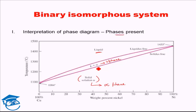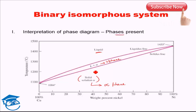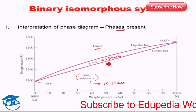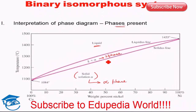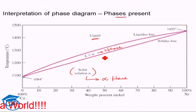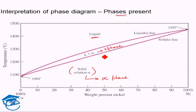You may ask: how do we identify the composition of the phases present, and in the two-phase region, what is the percentage of each phase? Is it equal, or is there some other approach? Those are exactly the other things a phase diagram tells us.